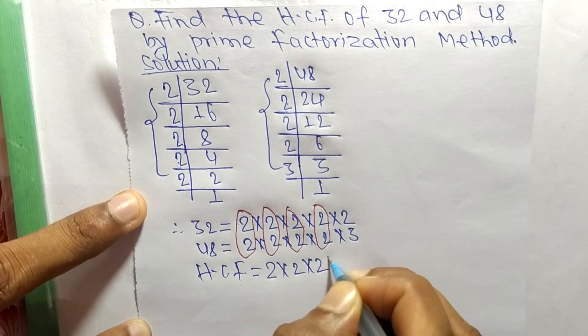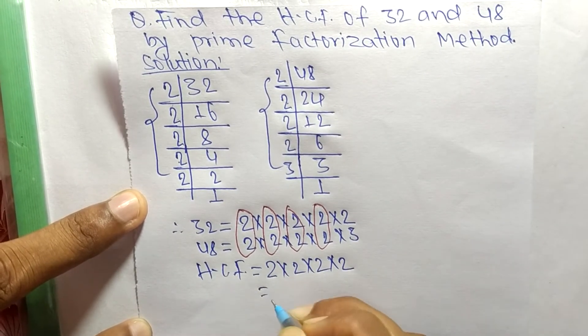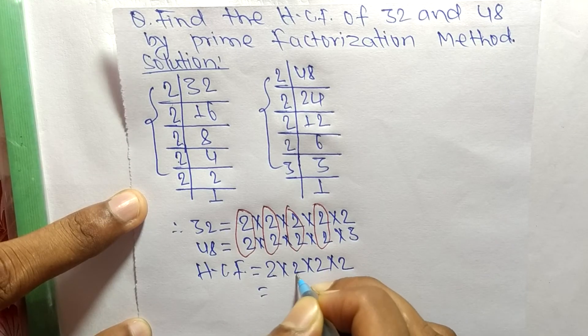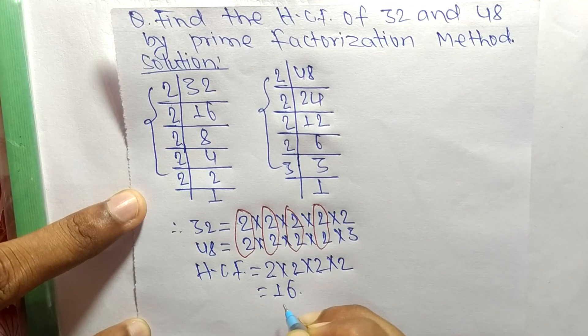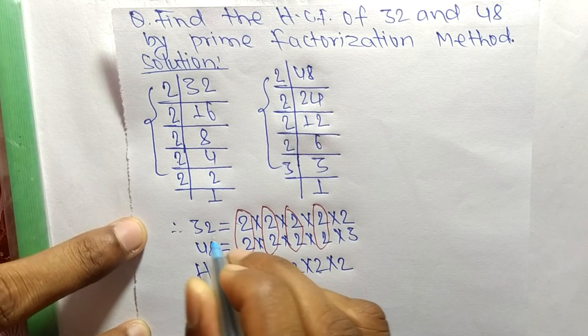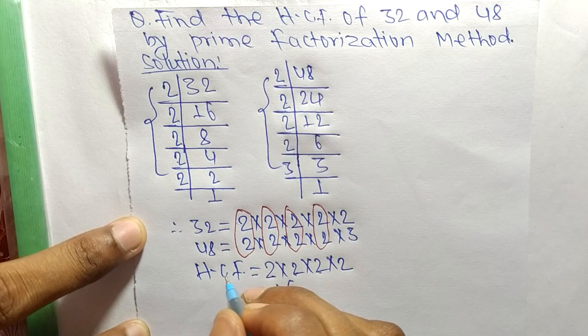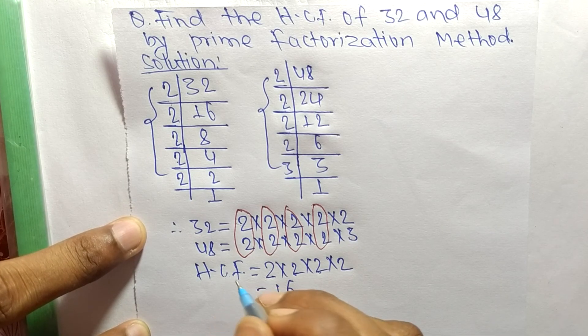That is 2 times 2 times 2 times 2. So 2 times 2 means 4, 4 times 2 means 8, and 8 times 2 means 16. So 16 is the HCF of 32 and 48. That's all for today, thanks for watching.